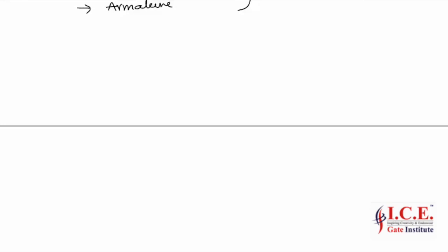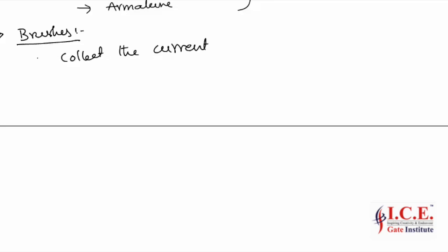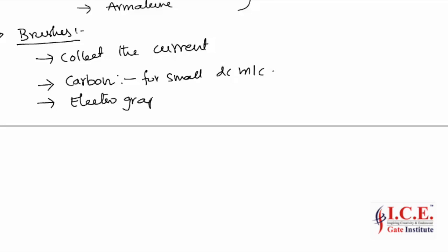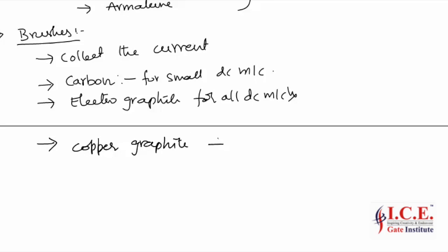The last part in the stator is the brushes. The purpose of the brush is to collect the current and transfer it to the external circuit. Brushes are made of carbon for small DC machines, electrographite for all general DC machines, and a special copper-graphite material which is used for low-voltage, high-current DC machines.